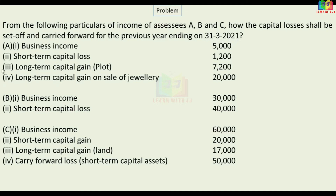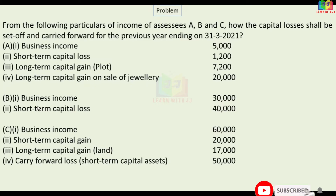Let's talk about Assessee A: business income, short-term capital loss, long-term capital gain on plot, and long-term capital gain on sale of jewellery. Now, Assessee B has business income and short-term capital loss.